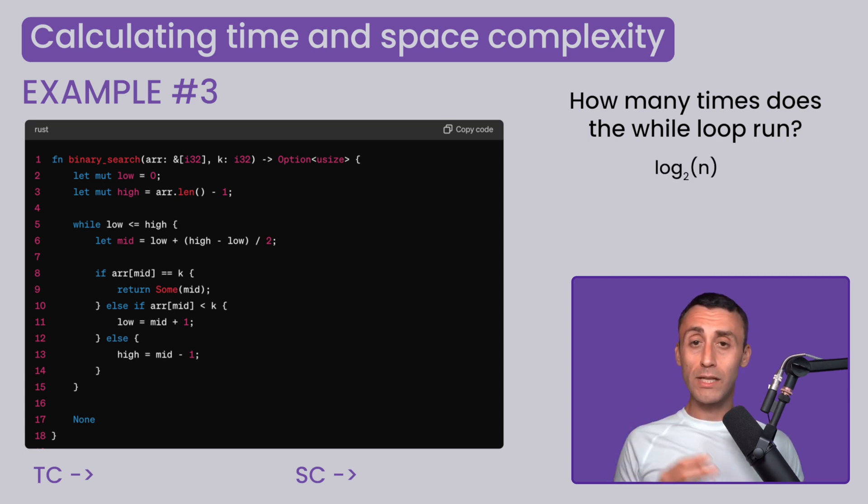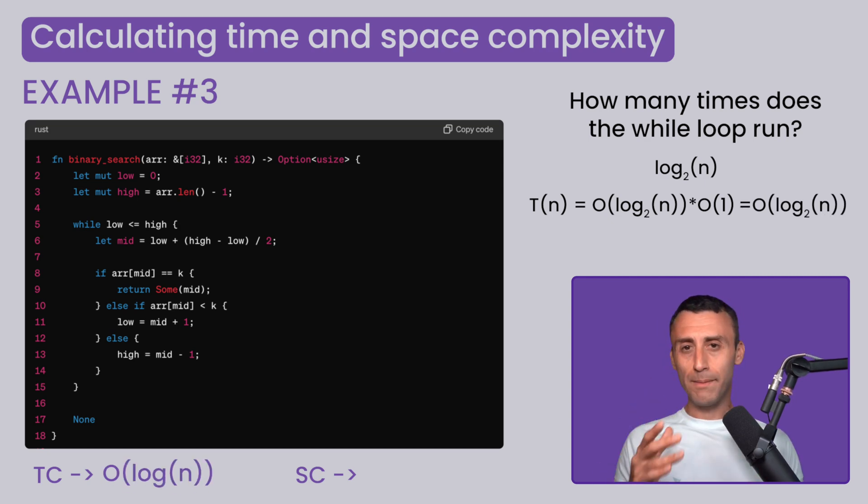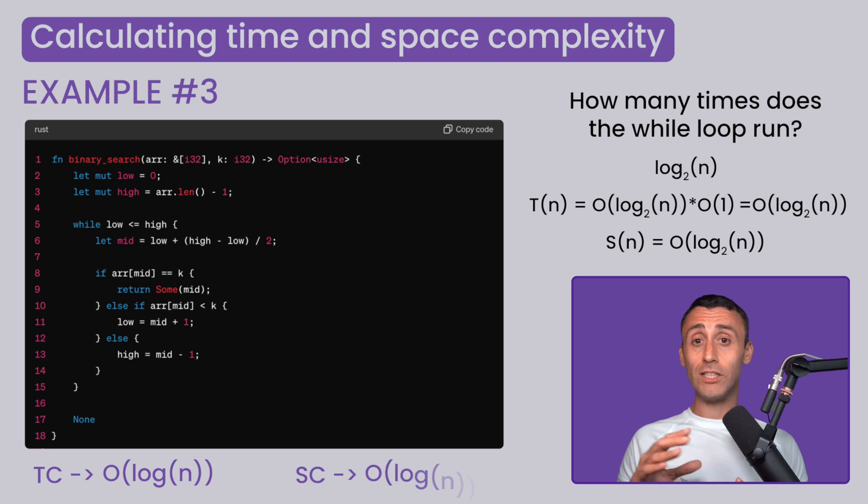So the algorithm's overall time will be big O of log base 2 of n multiplied big O of 1, which gives us big O of log base 2 of n. Similarly, the space complexity is also just dependent on the number of times the loop runs, since everything else takes up constant space here. This gives us the space complexity to be big O of log base 2 of n.